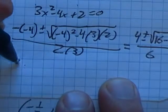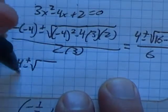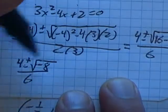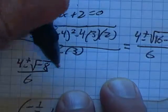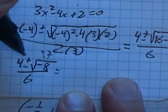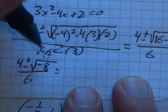So now I have 4 plus or minus the square root over 6. 16 minus 24, that's negative 8. Okay, so I know I'm going to have an i in my solution. I also know that 8 splits into 4 times 2.